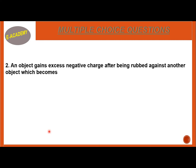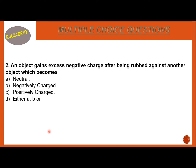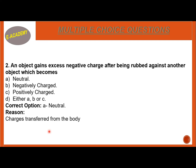MCQ Number 2: An object gains excess negative charge after being rubbed against another object. Which will become neutral — negative charge, positively charged, either A, B, or C? The correct option is A, Neutral. The reason is that charges are transferred from one body to another when objects are rubbed, and that body becomes neutral.